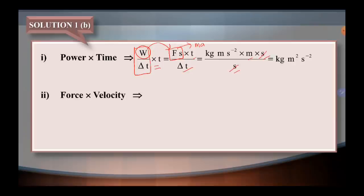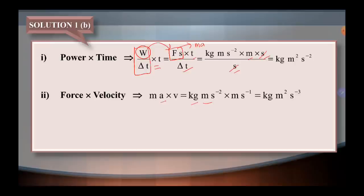Question number 2: force multiplied with velocity. We know force is mass times acceleration, multiplied with velocity. Unit for mass is kilogram, unit for acceleration is meter per second squared, and unit for velocity is meter per second. Meter and meter — kita multiply, so bila kita multiply, index kita tambahkan. So the answer is kilogram meter power of 2 per second power of 3. The second unit is negative 2 tambah dengan negative 1, so dia akan dapat negative 3.